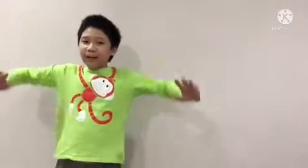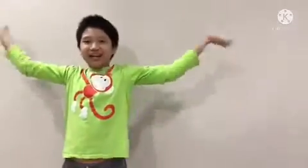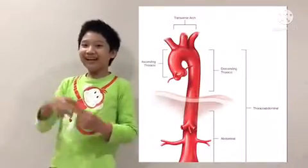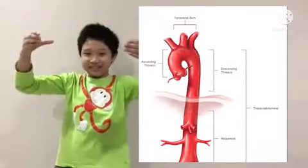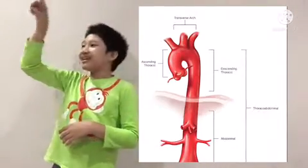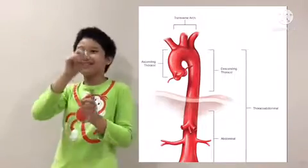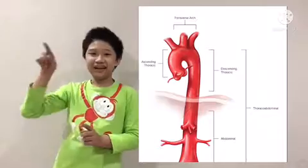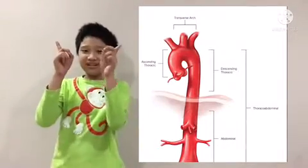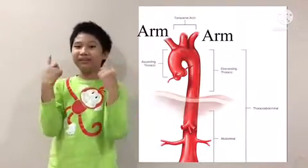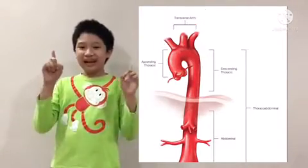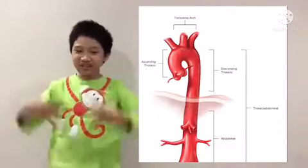When your heart squeezes blood out to the rest of the body, it uses the largest artery in your entire body: the aorta. The aorta kind of looks like an upside-down E, with three things branching up and the rest going down into the legs. The two on the sides go to the arms and the middle one goes to the head. And the rest feeds back to the heart, because the heart is a big muscle and it needs some oxygen too.